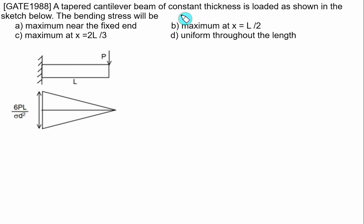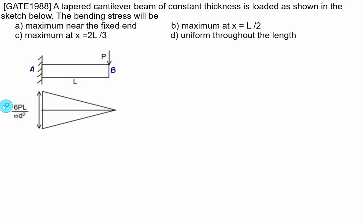A tapered cantilever beam of constant thickness is loaded as shown in the figure. A top view is given and we have a cantilever fixed at end A. At the free end the load P is acting. The length of the cantilever is L. The width at a section is equal to 6PL divided by sigma·d², and the width at x equal to zero is zero. So at B we take x equal to zero and at A we take x equal to L.